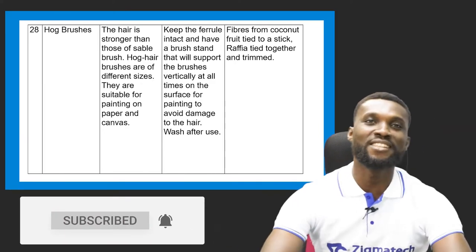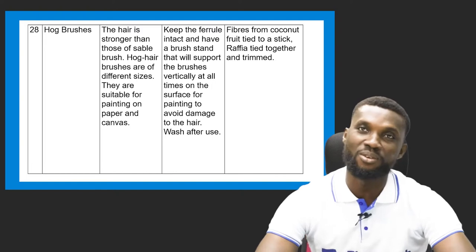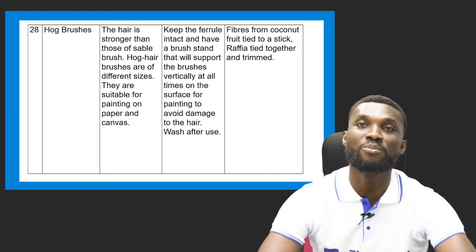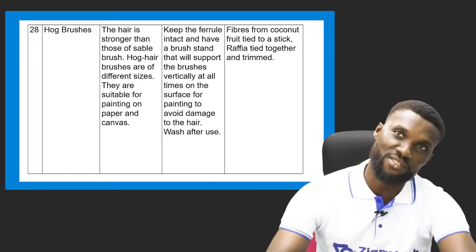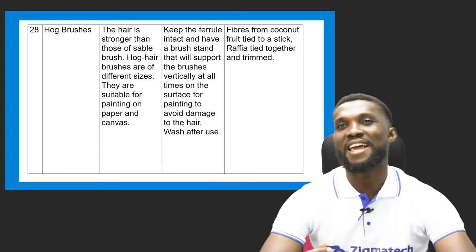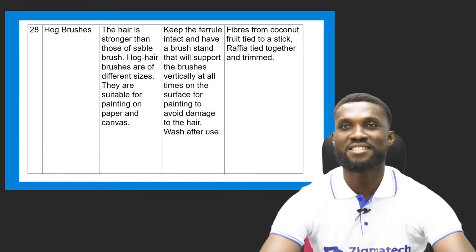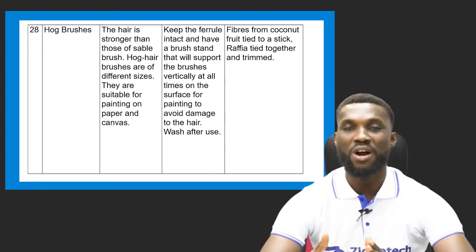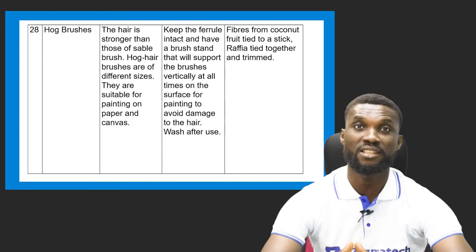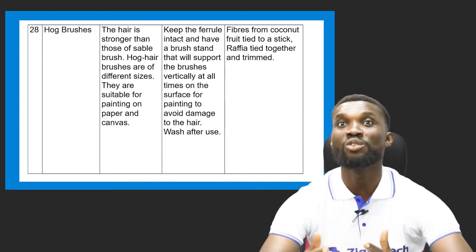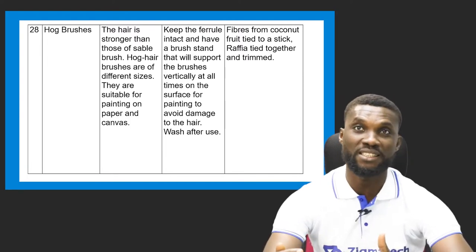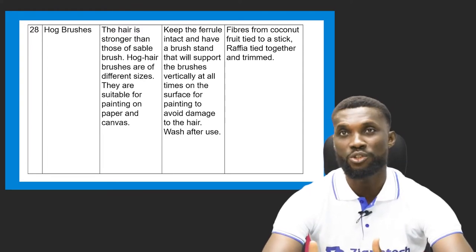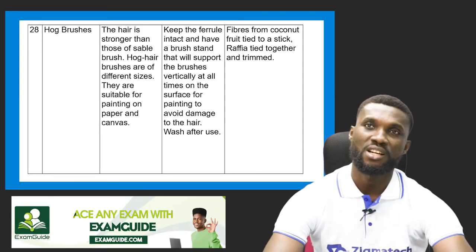The first tool or material we're looking at today is known as the hog brush — you can also call it the hoop brush. These are hairy, strong brushes. We have two types of brush: the hog brush and the sable brush. You can differentiate between them — the hog brush has hairs that are different in sizes and shapes, with different points, and they're usually used on canvas.